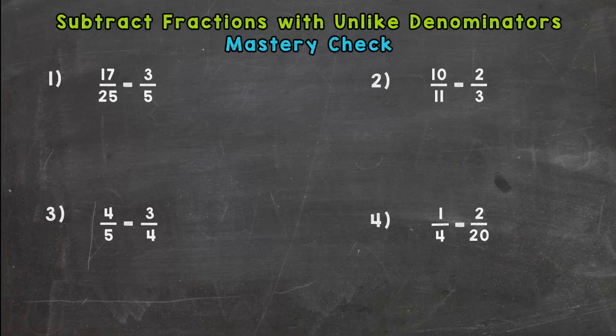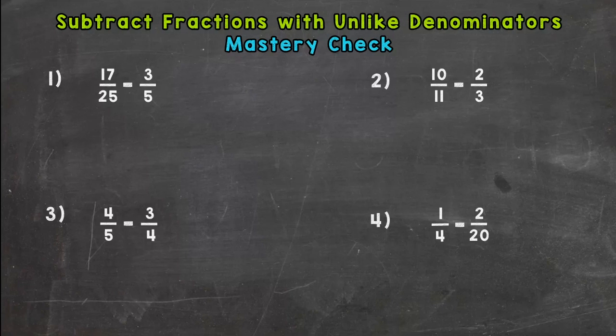If you're ready for the mastery check, you should have something out to write on and write with. When I say press pause in a few seconds, you'll press pause, solve these four problems, and when you're ready, press play and check your work and answers with mine. Your goal is three out of four correct or four out of four correct. If you're ready to go, go ahead and press pause.